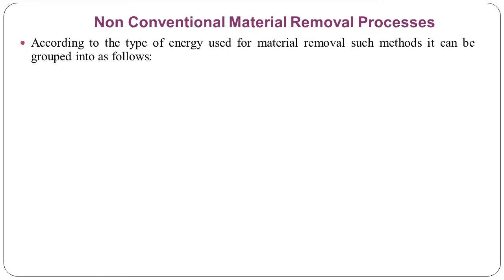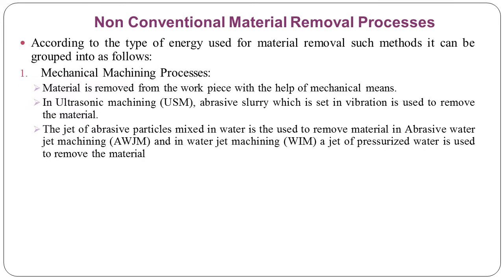Now, which are the non-conventional material removal processes? According to the type of energy used for material removal, such methods can be grouped as follows. First is the mechanical machining process, where material is removed from the workpiece with the help of mechanical means. In Ultrasonic Machining (USM), abrasive slurry set in vibration is used to remove material. A jet of abrasive particles mixed in water is used in Abrasive Water Jet Machining (AWJM), and in Water Jet Machining a jet of pressurized water is used. So USM, AWJM, and Water Jet Machining are types of mechanical machining processes.